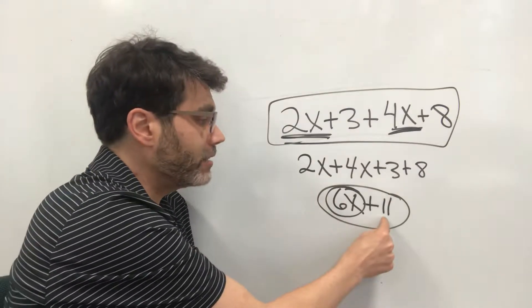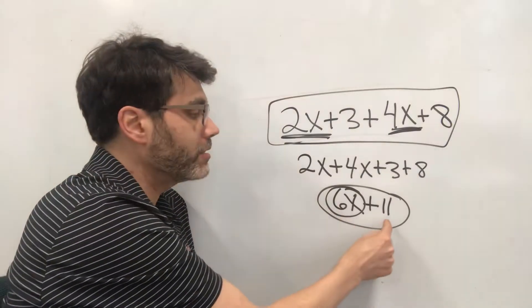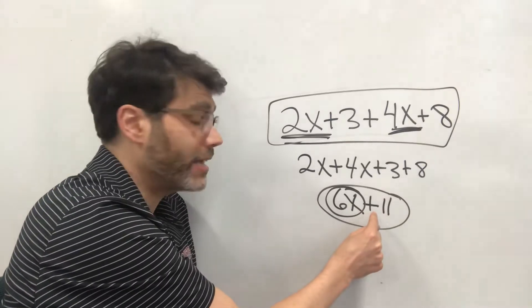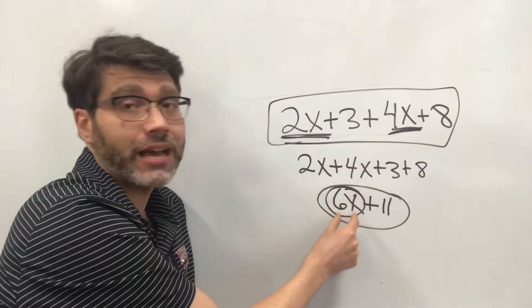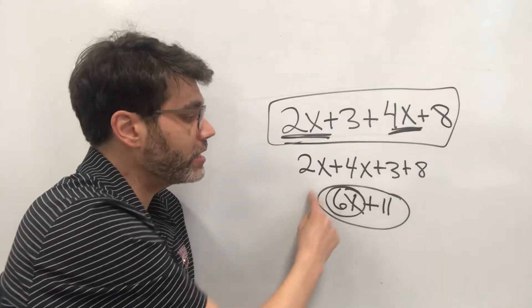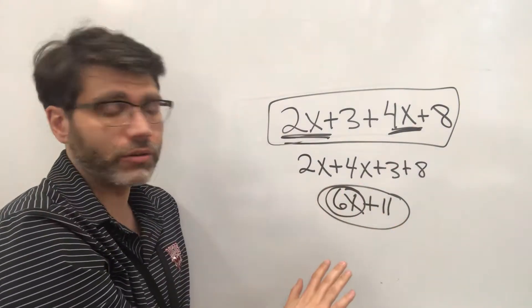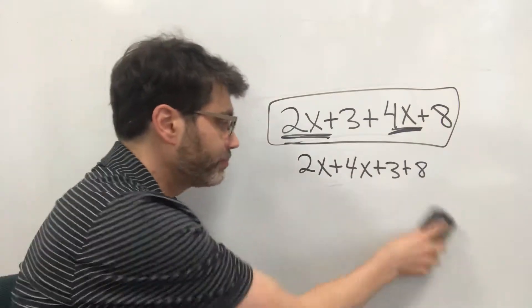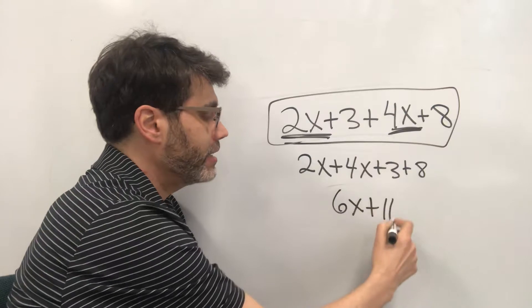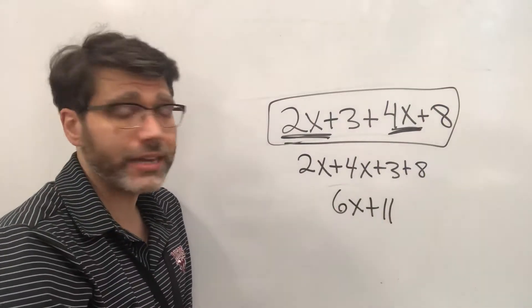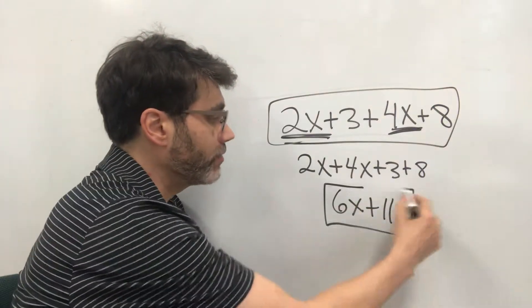We cannot combine 11 and 6x because 11 would be being added to 6x and we need to do multiplying 6x. 6 times x first. So this is as far as we can go. It looks a little funny that as far as you can go is not as squished together as you would like. But this really is as far as we can go.